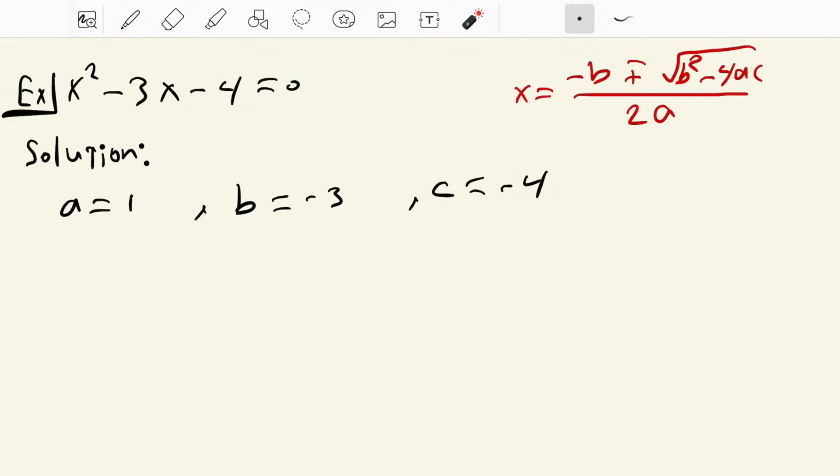Now we have to put it in this formula. We get x equal to negative b, it becomes negative times negative 3, plus minus b squared which is negative 3 squared minus 4 times a which is 1 times c which is minus 4, over 2 times 1.